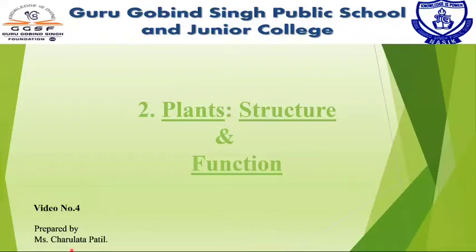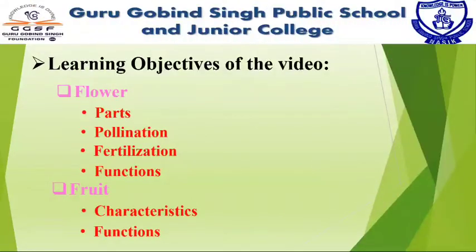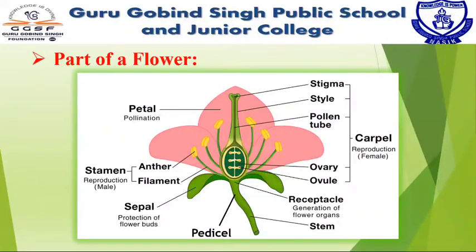Hello Learners! Today in this video we are going to learn 7th standard science chapter number 2, plants structure and function. In the previous video we learned about stem and leaf. Before we get started, let's take a look at the agenda. The first module is flower, where we will see different parts of it in detail, followed by the next module, fruit, in which we will focus on characteristics of fruits and its functions. Let's begin with parts of a flower.